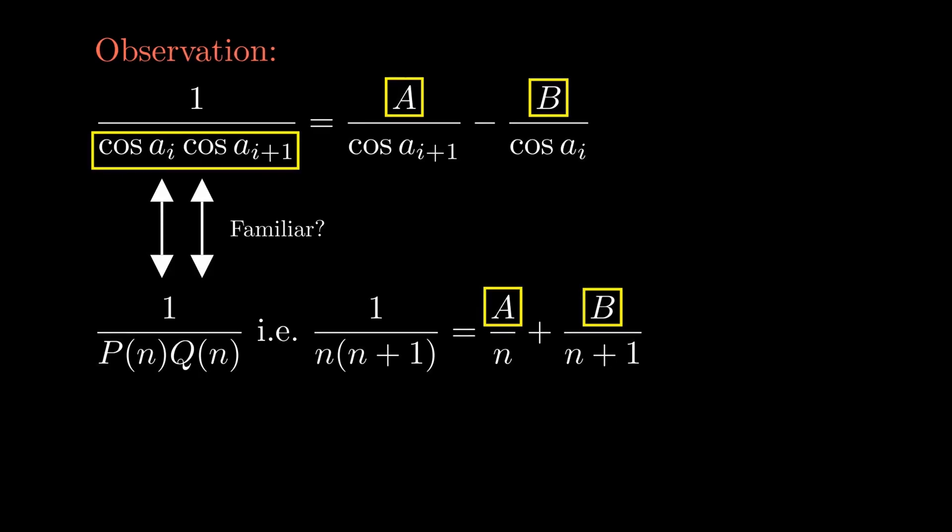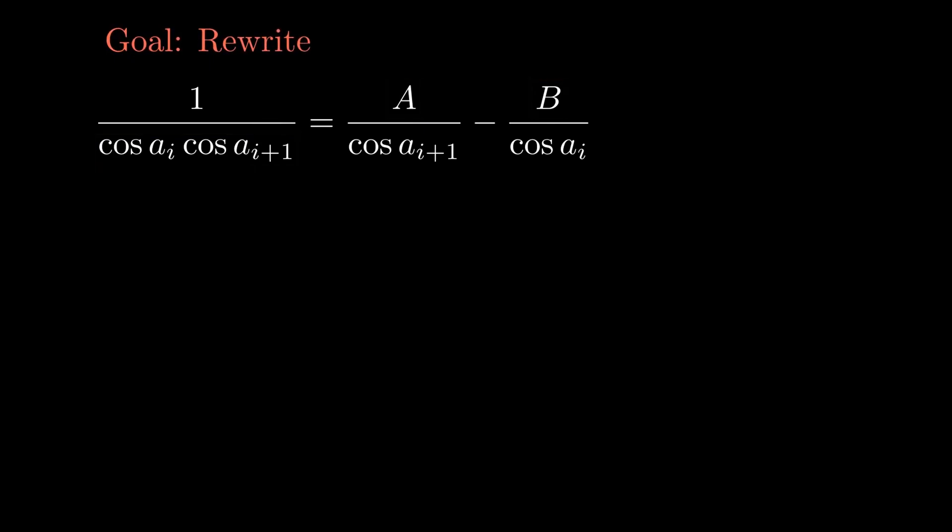We want to rewrite the expression 1 over cosine aᵢ times cosine aᵢ₊₁ into A over cosine aᵢ₊₁ minus B over cosine aᵢ. In other words, we want A times cosine aᵢ minus B times cosine aᵢ₊₁ to be equal to 1.